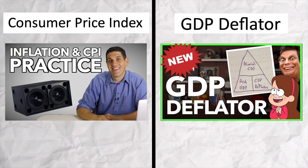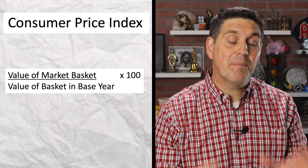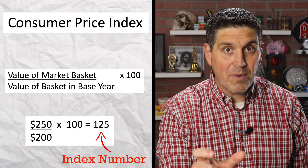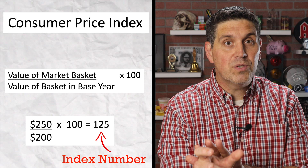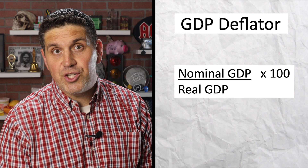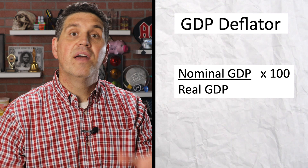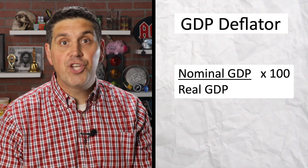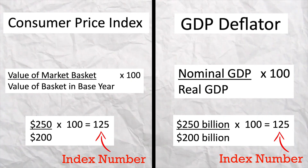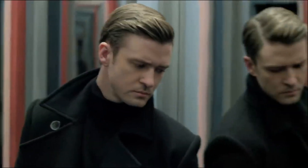Another set of mirrored concepts is the CPI and the GDP deflator. The CPI is the value of a market basket divided by the value of that basket adjusted for inflation, times 100. That pops out an index number — not a percent — but you can use it to figure out the percent change in inflation since the base year. The GDP deflator equation is the same idea, except instead of a basket, it's everything in the economy: nominal GDP divided by real GDP, times 100. Again, you get an index number that tells you how much prices have changed since the base year. They're not the same concepts, but they're mirrored.